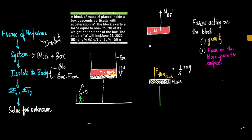This is the box — I have taken only the floor of the box. The question states the block exerts a force equal to one-fourth of its weight on the floor of the box. In the free body diagram, the yellow line here represents the force on the floor due to the block. By Newton's third law of motion, if a body applies a force on the floor, the floor will apply an equal and opposite reaction force onto that body.